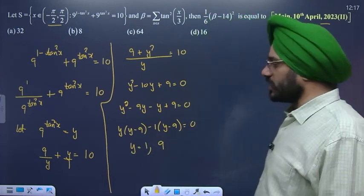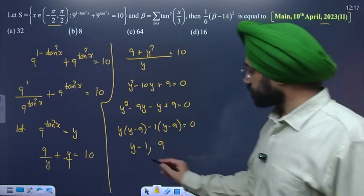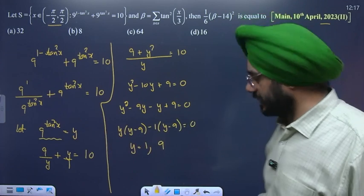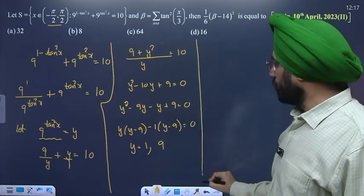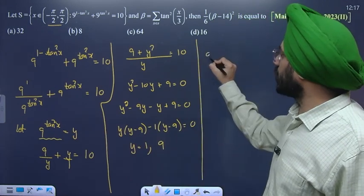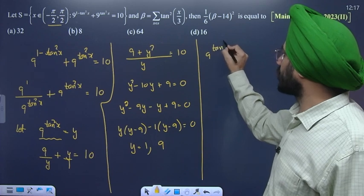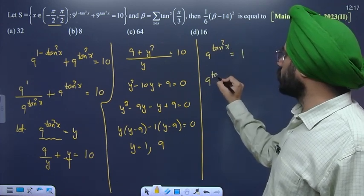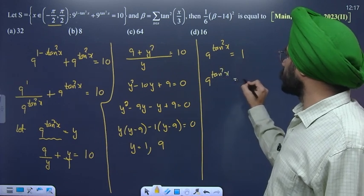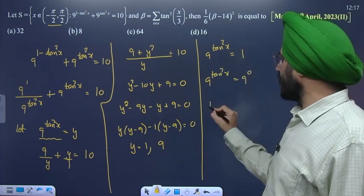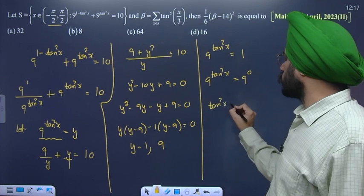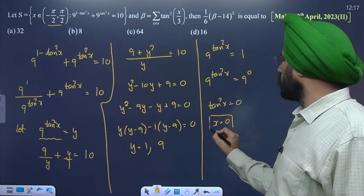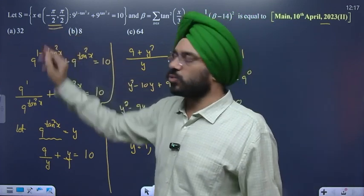Two values are coming from y. Since y = 9^(tan²x), for y = 1: 9^(tan²x) = 1 = 9^0, meaning tan²x = 0. Therefore value of x is only 0, because our domain is minus pi by 2 to pi by 2.